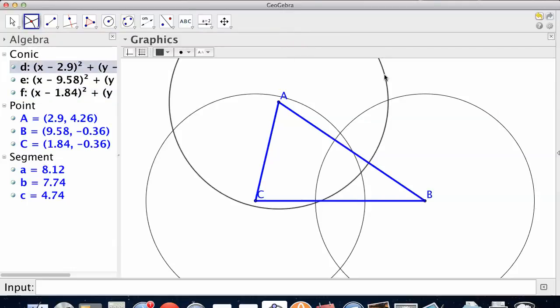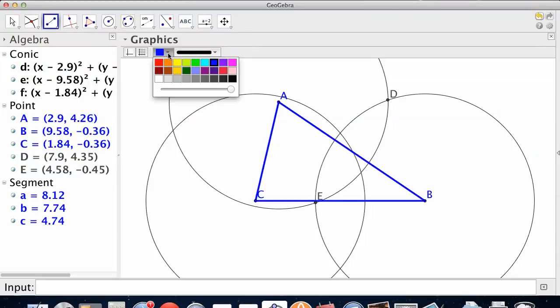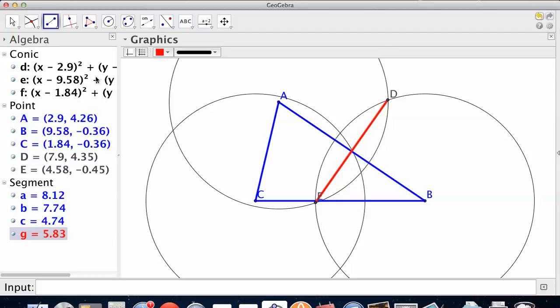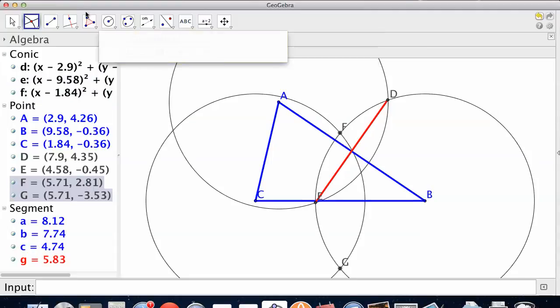Find the intersection of these two circles. Connect the intersection. Find the intersection of the other, these two circles. Connect.